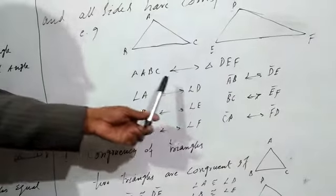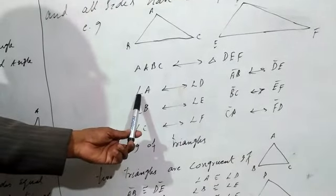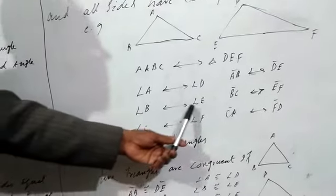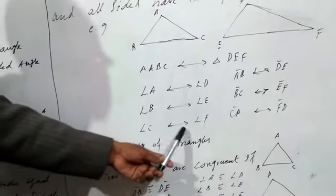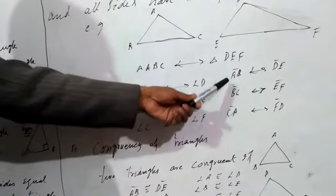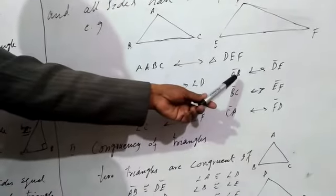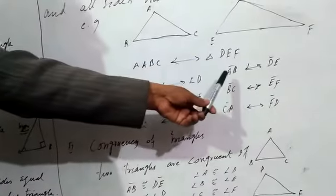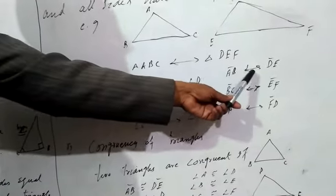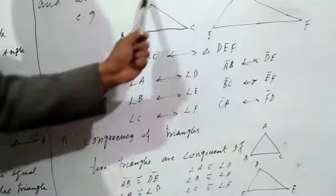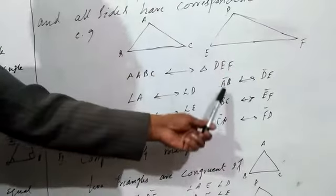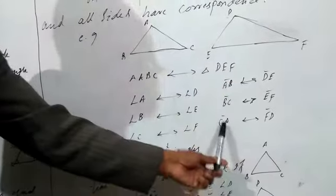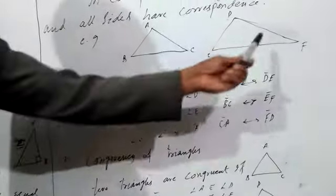Angle A corresponds to angle D, angle B corresponds to angle E, and angle C corresponds to angle F. In the same way, three sides also correspond to each other: side AB corresponds to side DE, side BC corresponds to side EF, and side CA corresponds to side FD.